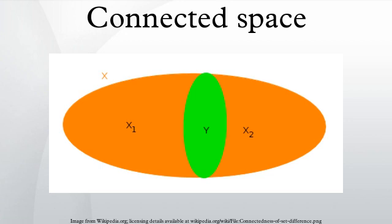Disconnected spaces: a space in which all components are one-point sets is called totally disconnected. Related to this property, a space X is called totally separated if, for any two distinct elements x and y of X, there exist disjoint open neighborhoods U of x and V of y such that X is the union of U and V. Clearly any totally separated space is totally disconnected, but the converse does not hold.